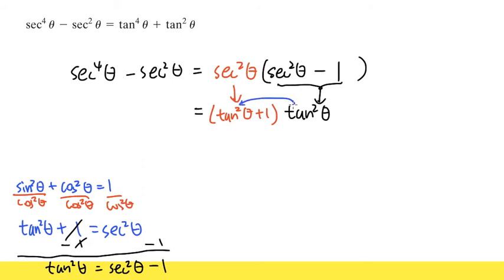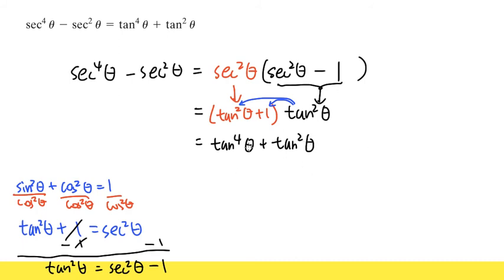Let's distribute. Tangent squared times tangent squared gives tangent to the fourth power theta — be sure to write down the theta, otherwise your teacher won't be happy. Plus one times tangent squared theta is just tangent squared theta, and then we are done. If you want to mark the proof complete, you can put a little filled-in box. That means you did the proof — you showed that the left-hand side equals the right-hand side, verifying the identity.